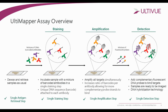The Ultimapper assay is actually quite simple. UltiView uses antibodies conjugated to unique single-stranded DNA barcodes. These unique DNA barcodes are unique to each individual antibody — CD4 has its own signature, CD3 has its own, CD8 has its own. This eliminates the need for secondary antibodies, which helps eliminate nonspecific and background staining. It also allows the use of any species of antibodies — all mouse, rabbit, monoclonal — species is completely independent.